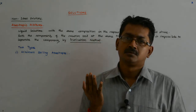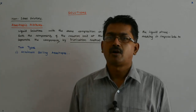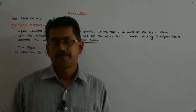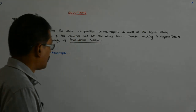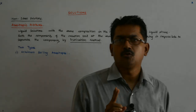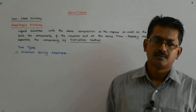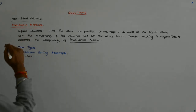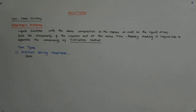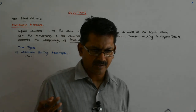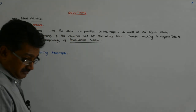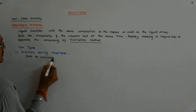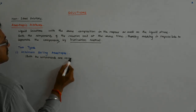Minimum boiling indicates that the boiling point becomes lesser than what you had predicted. How can that happen? In a solution, the boiling point has become lesser than what you would have otherwise predicted. Both components are volatile here — if one was non-volatile, it would never be azeotropic, because the problem arises when both components are present in the vapor phase.